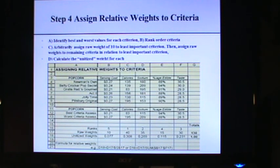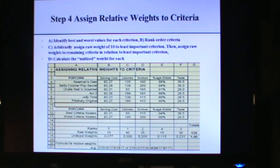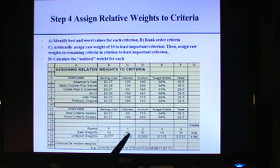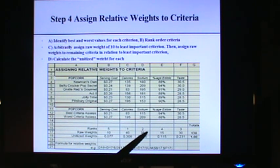The next thing we need to do is rank order the criteria — deciding which of these five criteria is most important and which is least important. This is really important and may change depending on your decision maker, so involve your decision maker in this process. For me as a decision maker, calories would be most important — ranked number one. Cost would be least important, especially for something inexpensive like popcorn. So I have calories as most important, sodium as second, taste as third, popping percentage as fourth, and cost as fifth.